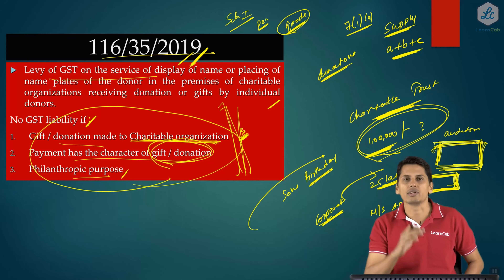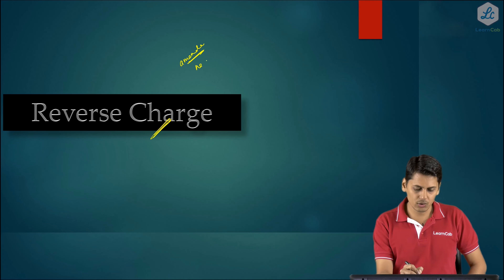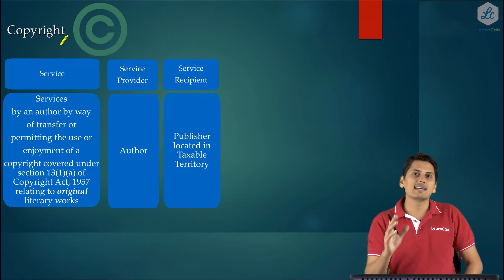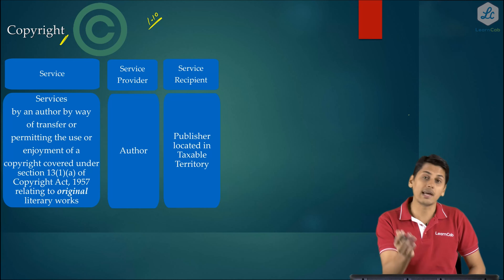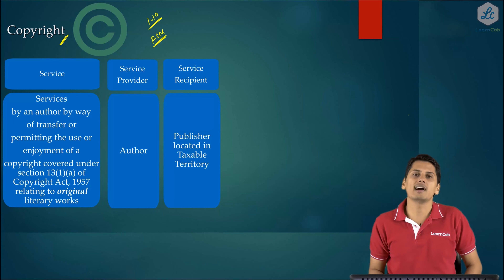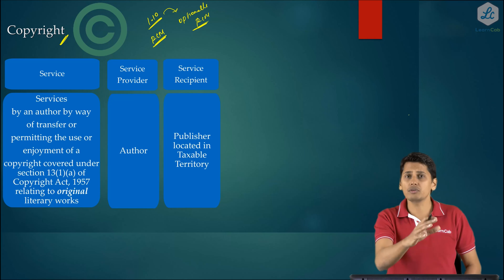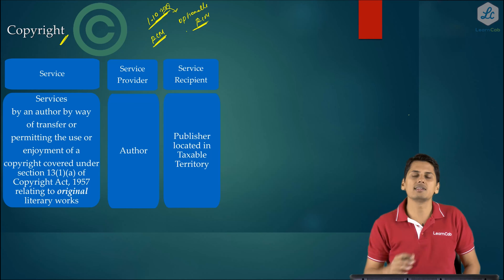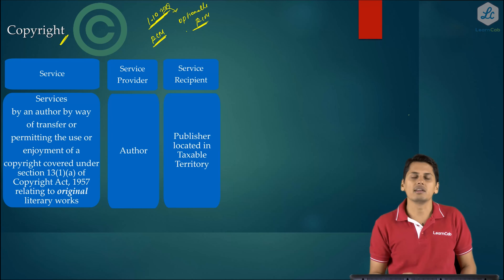The next amendment in reverse charge involves copyright services supplied by an author to a publisher. Prior to 1st October 2019, this was mandatorily under reverse charge mechanism. After 1st October 2019, it is optionally under reverse charge mechanism — meaning the author can opt to pay taxes under forward charge mechanism.